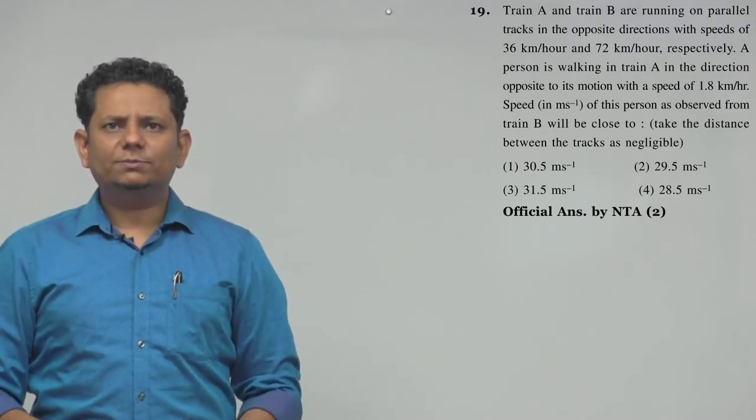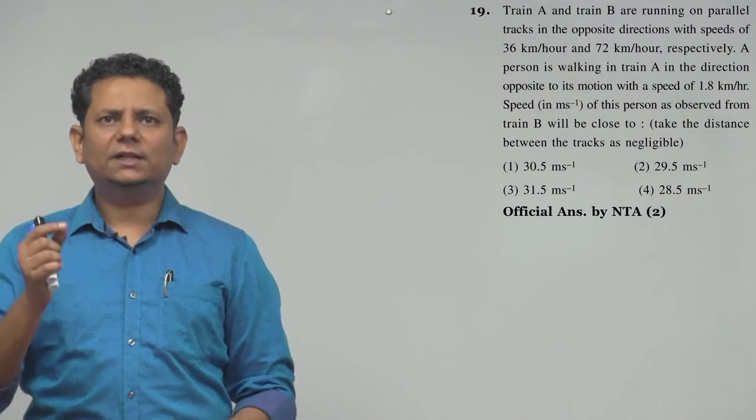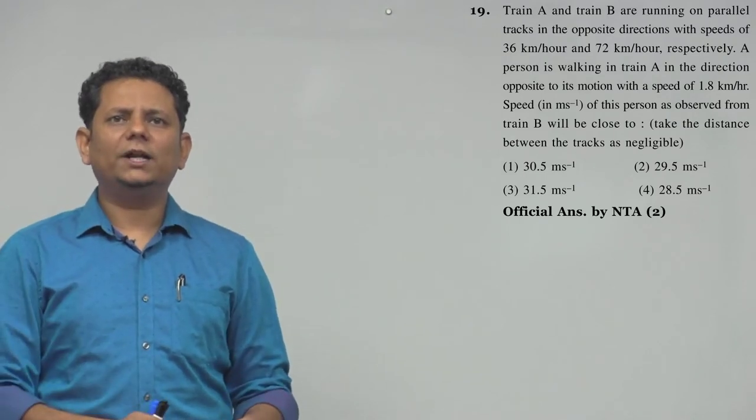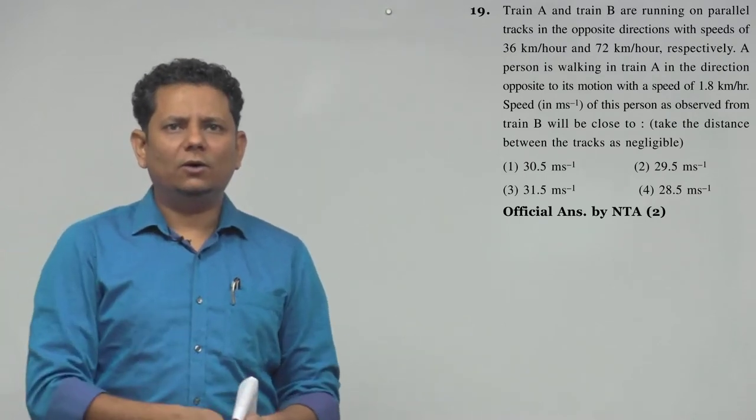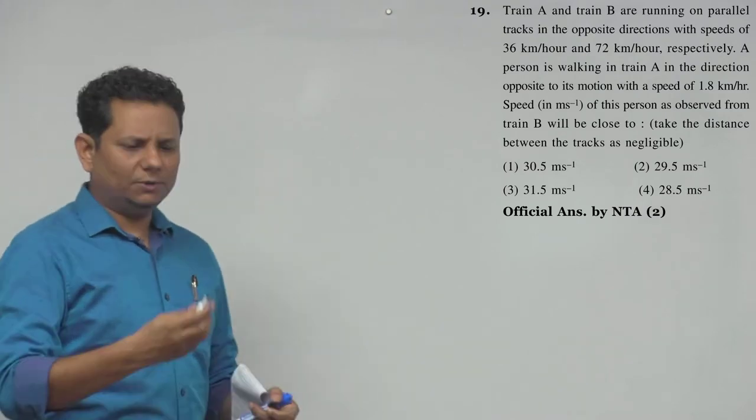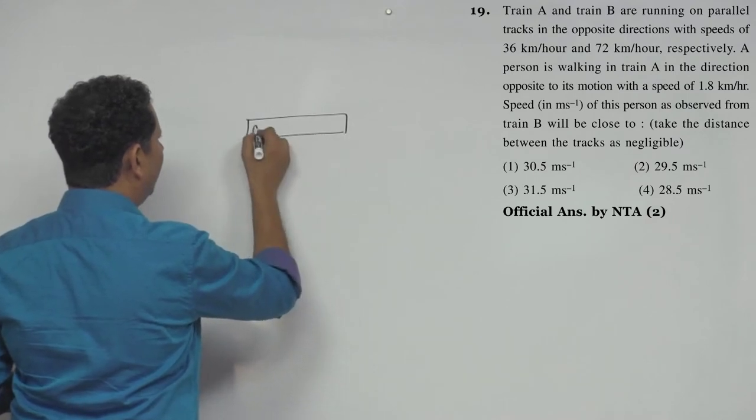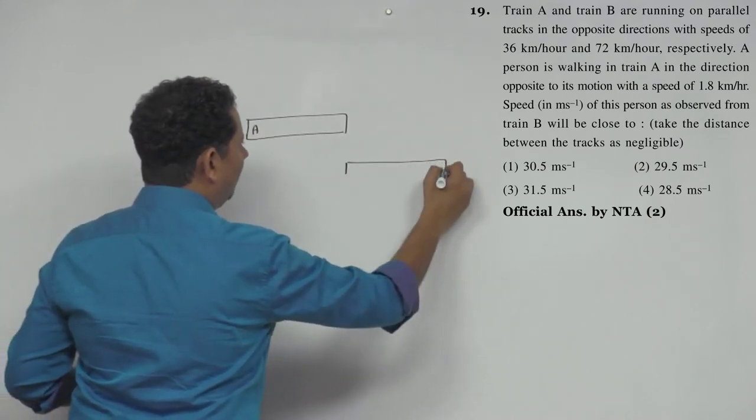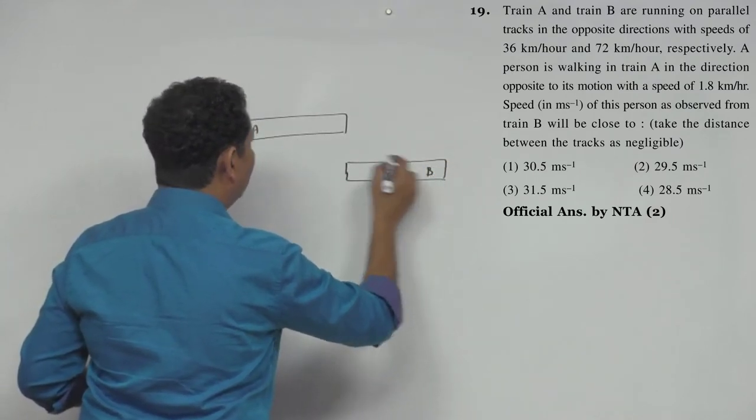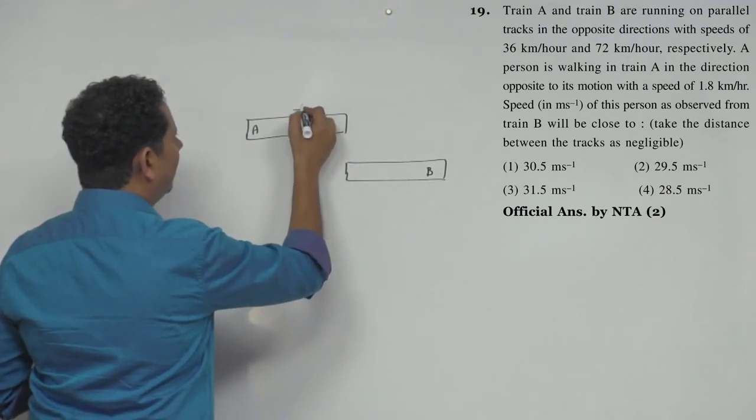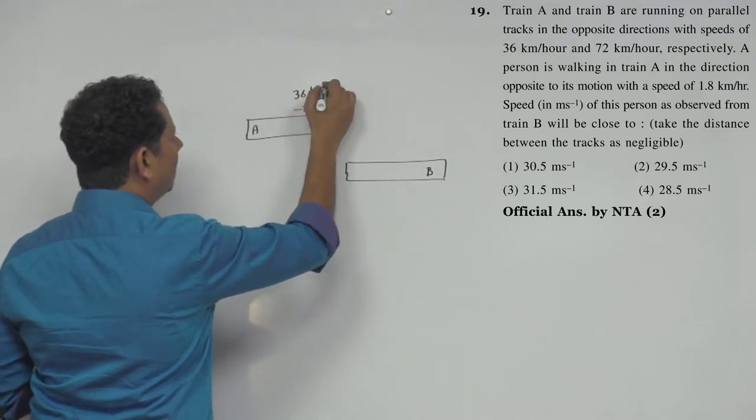The speed in meter per second of this person as observed from train B will be close to... 4 options are given. Simple. So you have train A, you have train B. Train A is running at 36 km per hour.